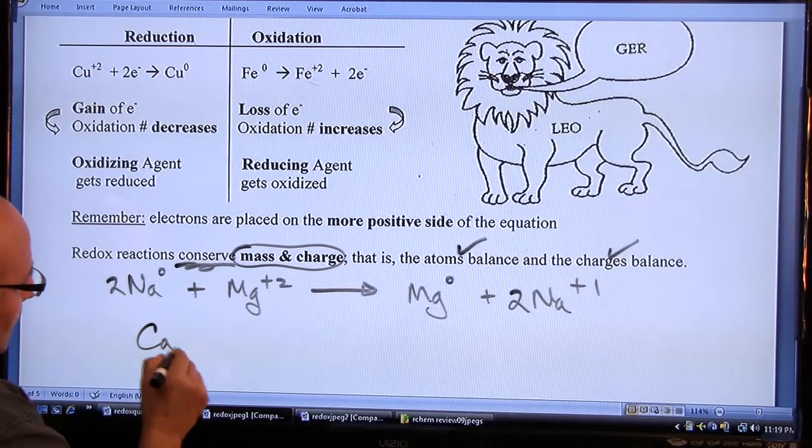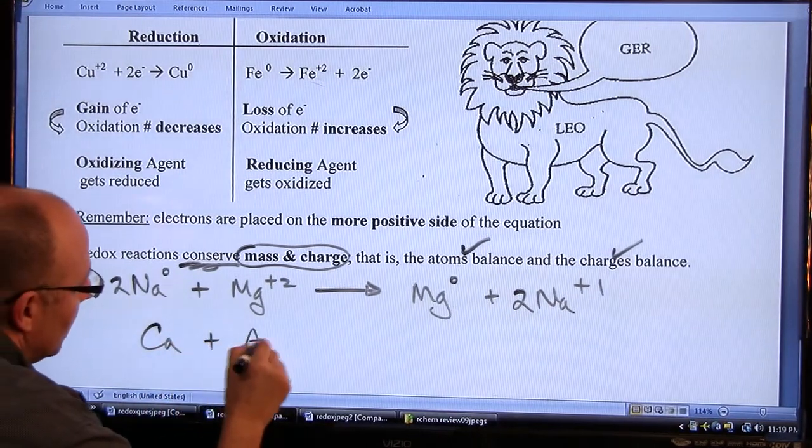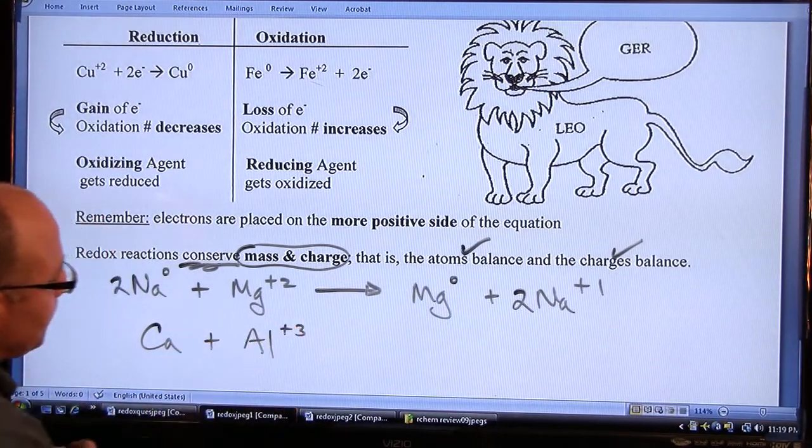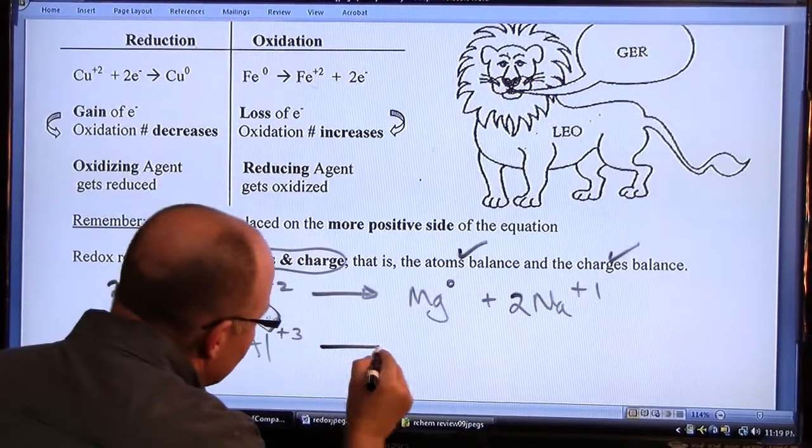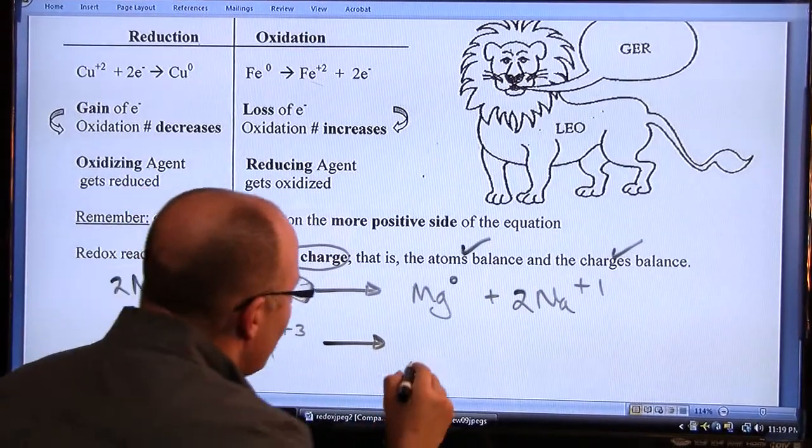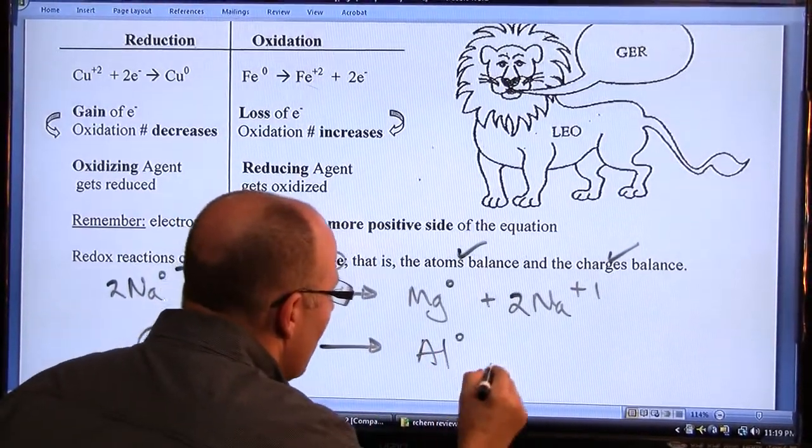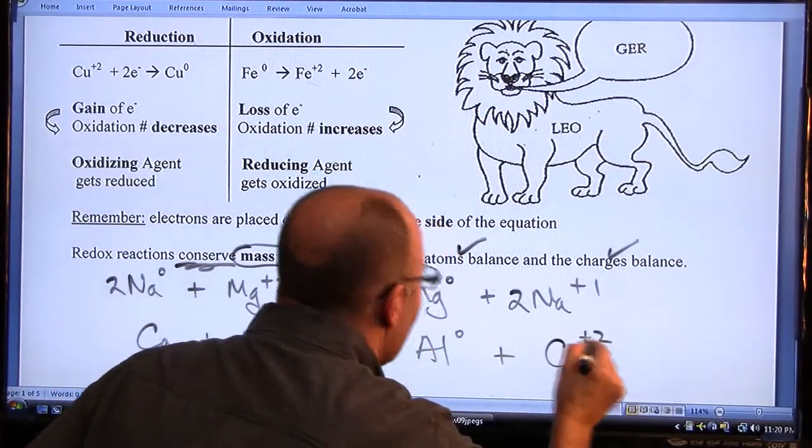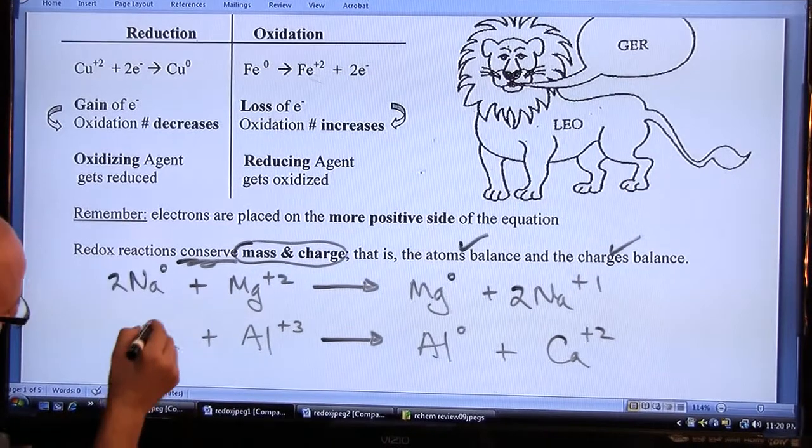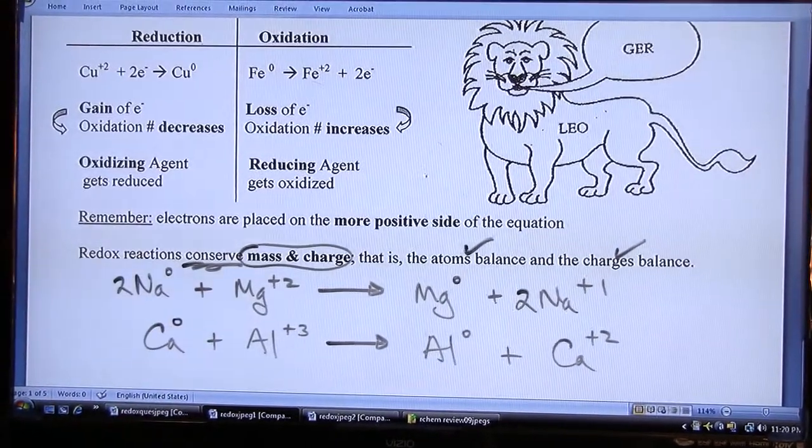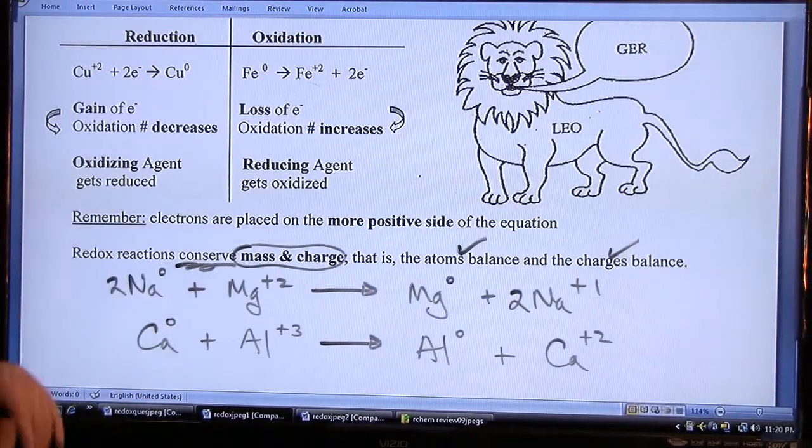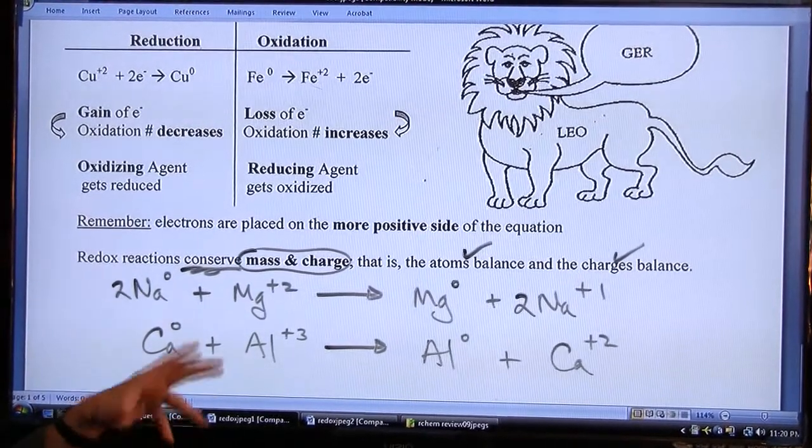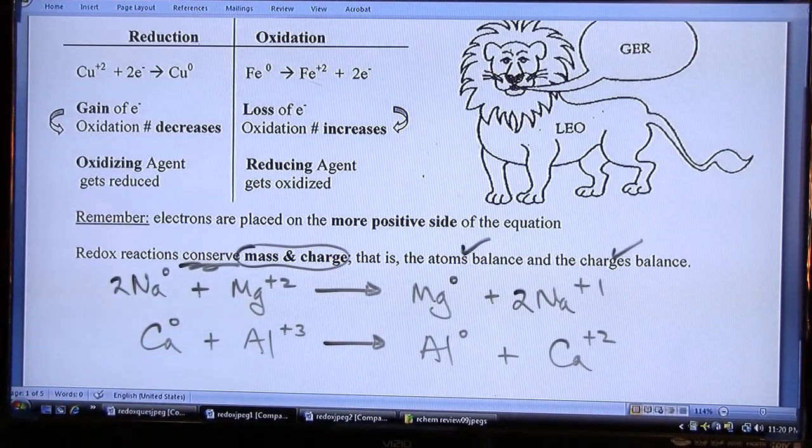Suppose we had calcium plus aluminum 3, and let's say that produces aluminum 0 and calcium plus 2. I'll place the 0 here for emphasis, but typically they don't write the 0 in when it's an element by itself, a free or uncombined element.